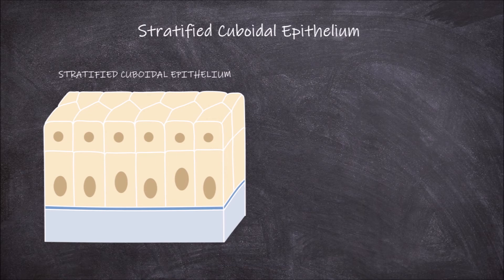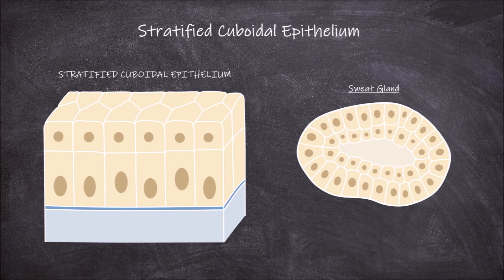This type of epithelium is found on the surfaces of various structures within the human body. One example are the sweat glands. As seen here, the sweat glands are made up of more than one layer of cells, with the apical layer being cuboidal.